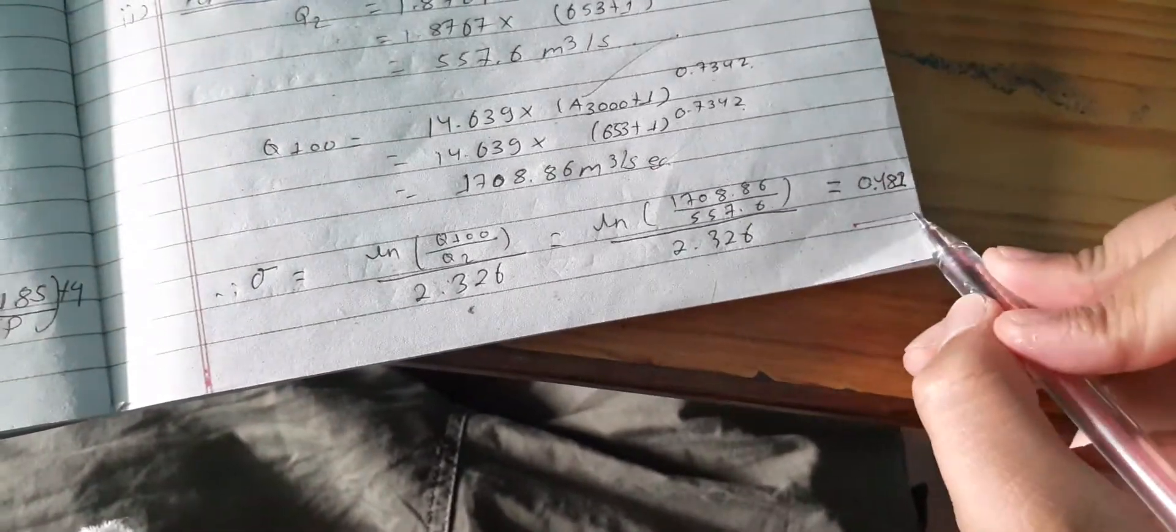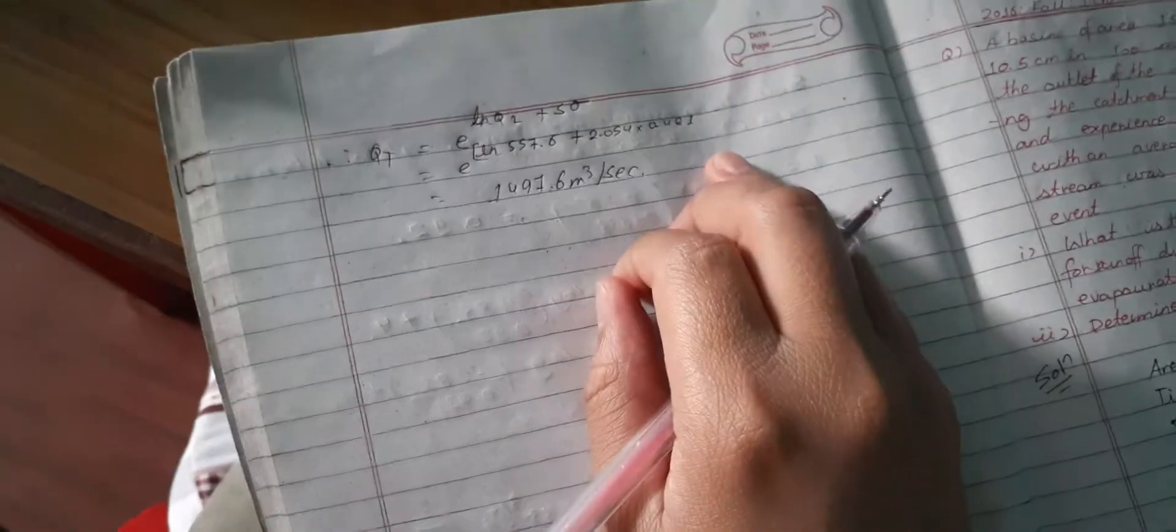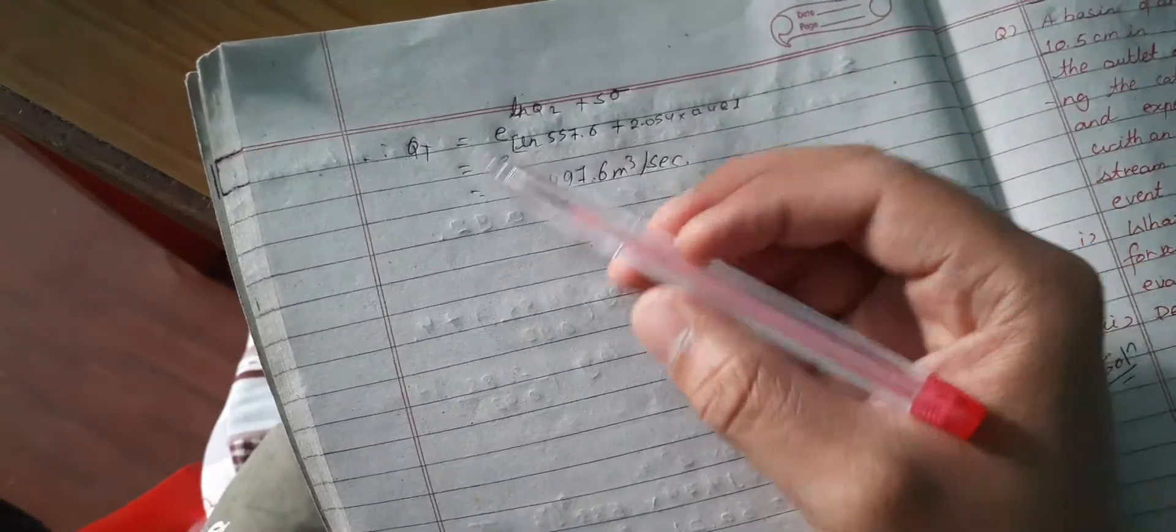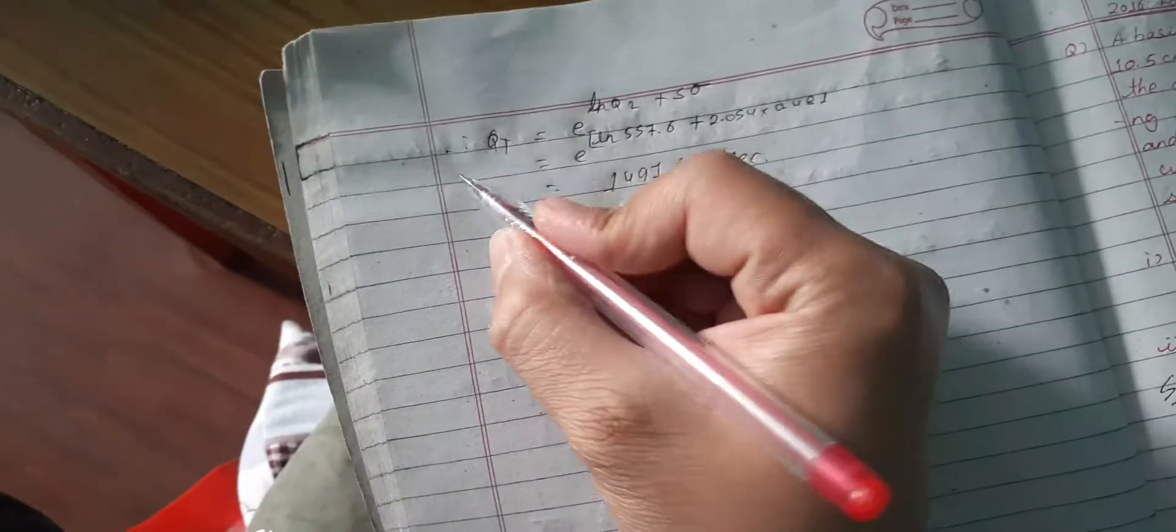We get σ = ln(Q₁₀₀/Q₂)/2.326. We place all the parameters and we got the value of sigma equal to 0.481. Now it's very simple, we're going to put the obtained parameters in the formula.